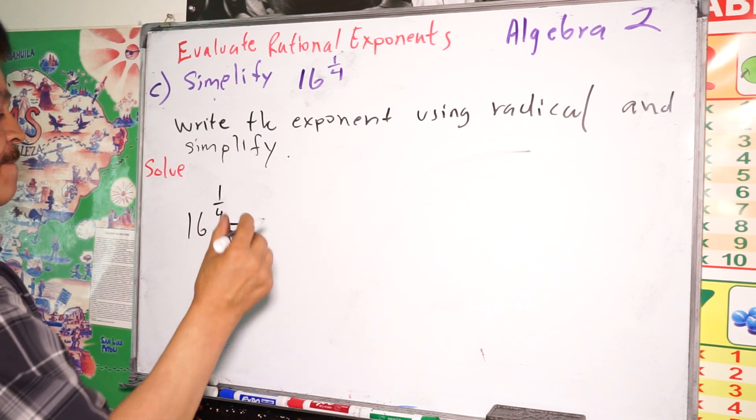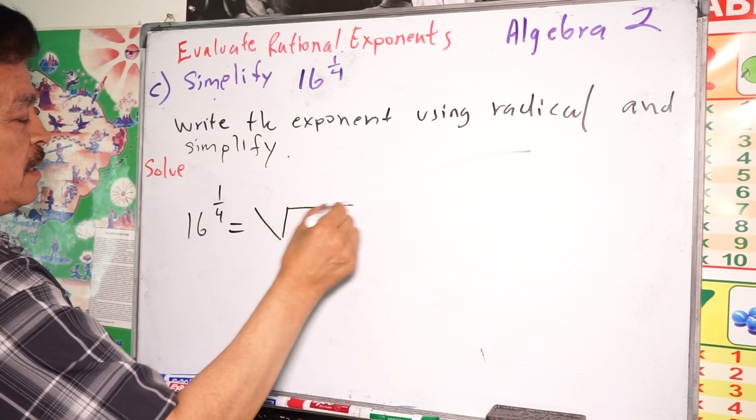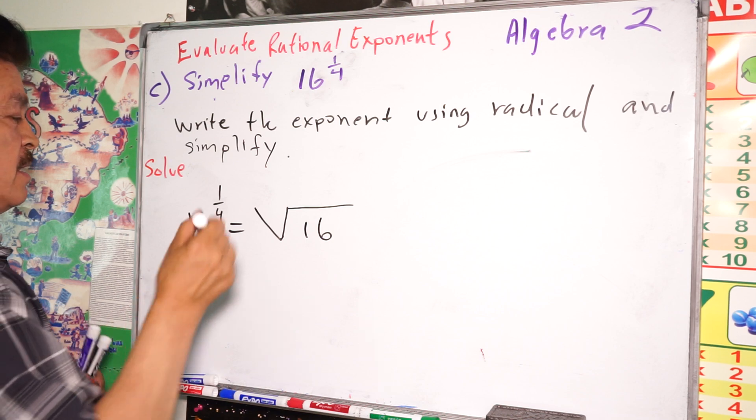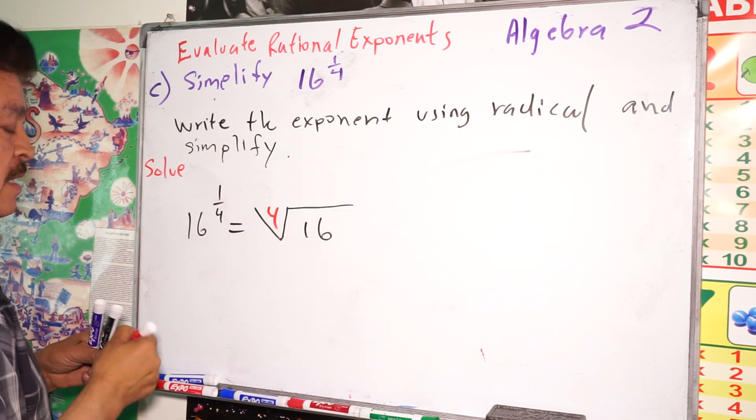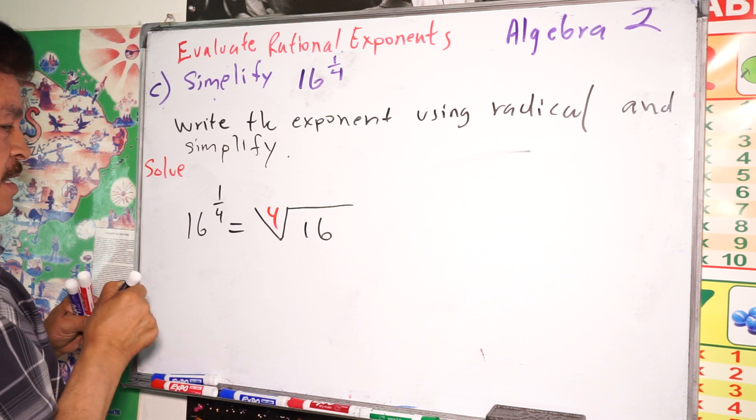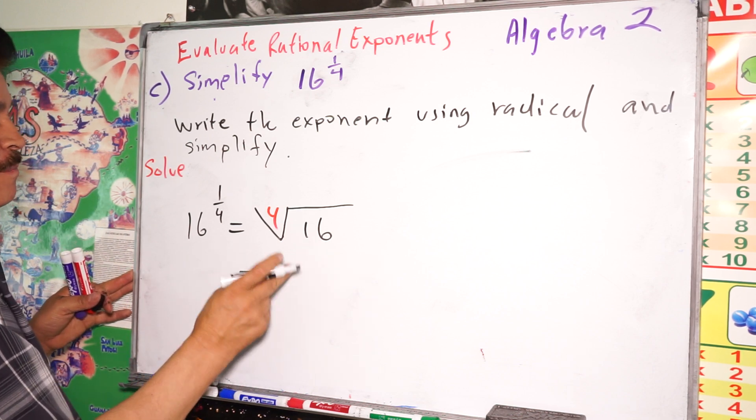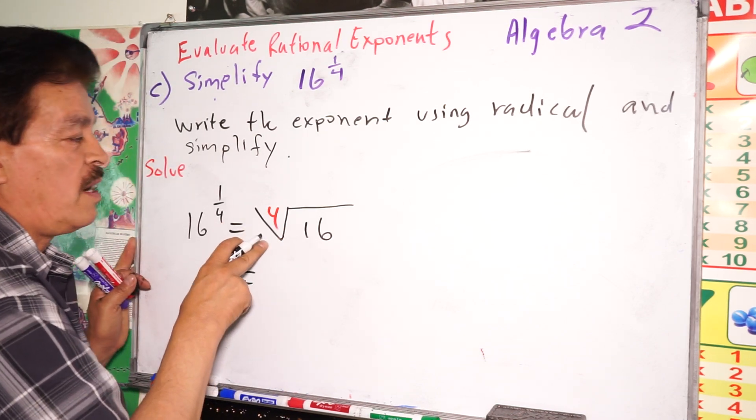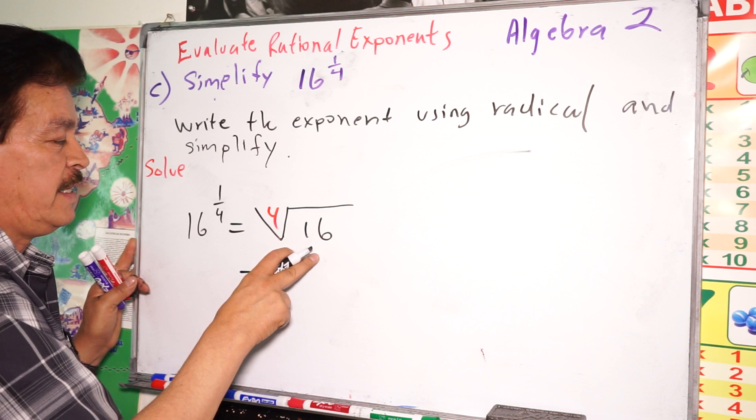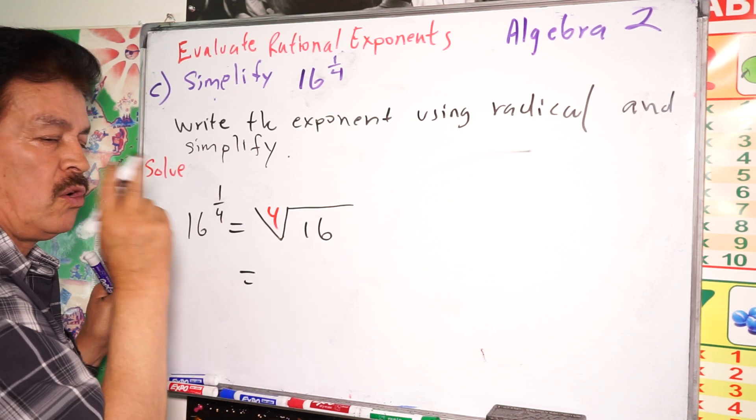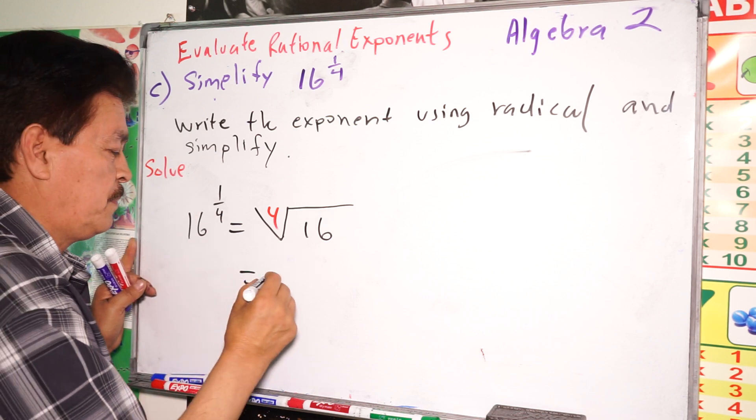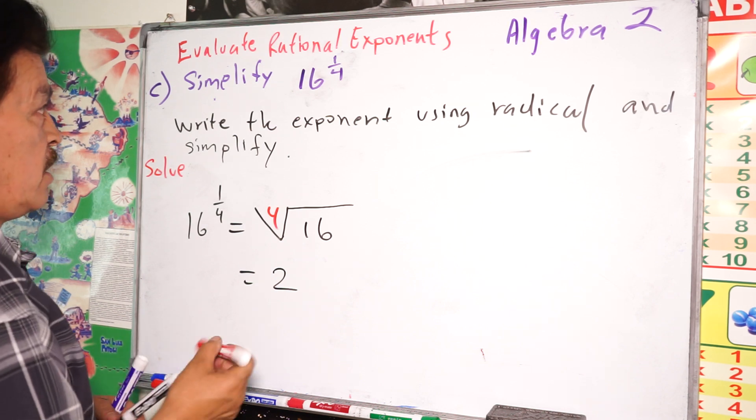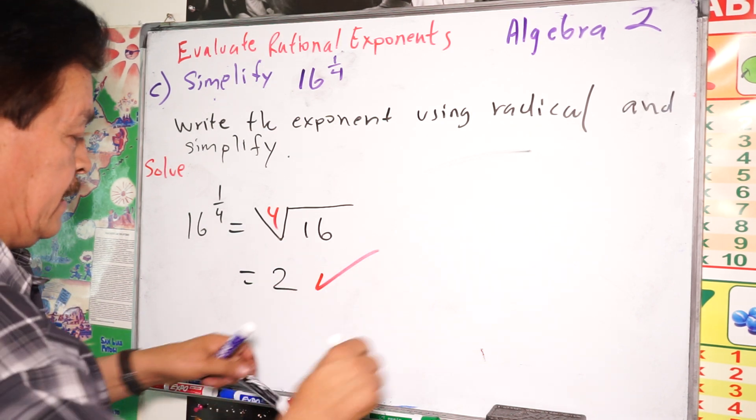So then 16^(1/4) equals the 4th root of 16. So 1 is 1, positive 1. The 4th root of 16 equals 2. 2 times 2 times 2 times 2 is 16. This is our answer. Our solution is done.